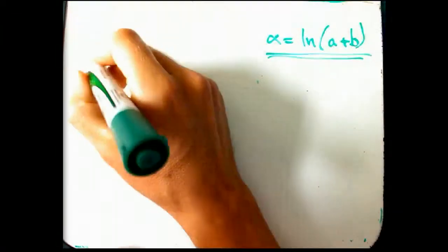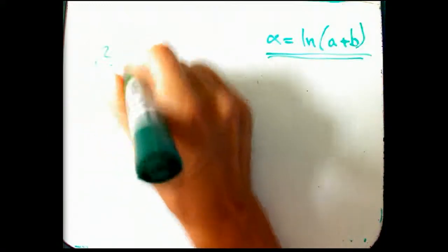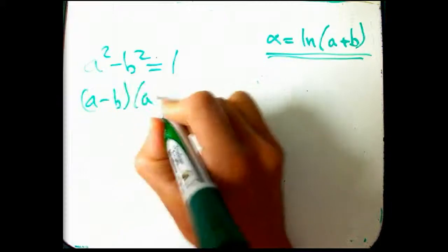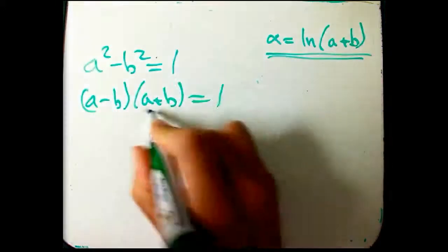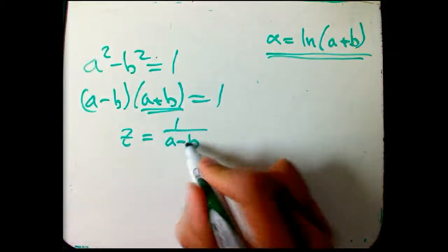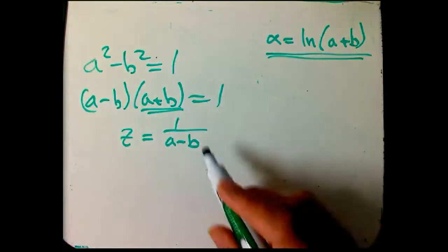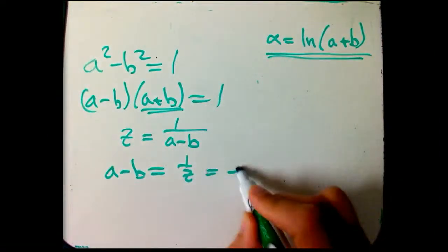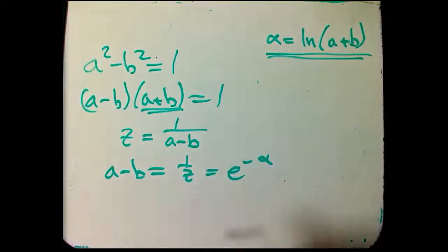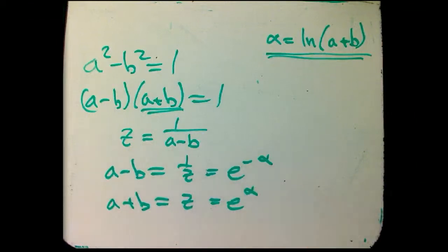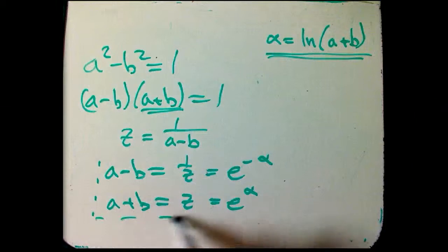So now here is what I want to remember: that a squared minus b squared is 1 and that factors. One reason that's really useful is, here's z. So z is not only a plus b, it's also 1 over a minus b. So in other words, a minus b is 1 over z, that's e to the minus alpha. And of course the definition was a plus b is z and that's e to the plus alpha. That's nice. That allows us to solve for a and b.